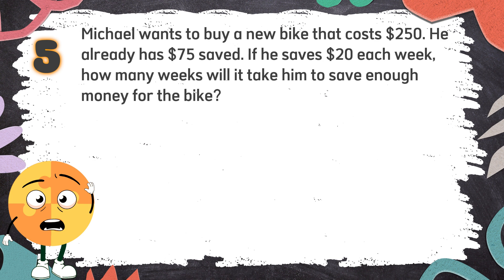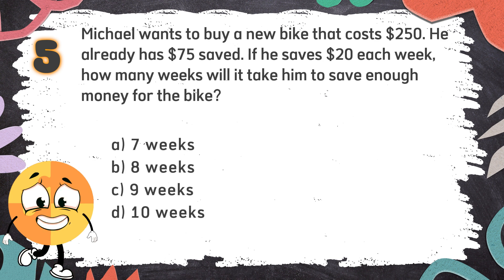Number 5: Michael wants to buy a new bike that costs $150. He already has $75 saved. If he saves $20 each week, how many weeks will it take him to save enough money for the bike? Again, Michael wants to buy a new bike that costs $150. He already has $75 saved. If he saves $20 each week, how many weeks will it take him to save enough money for the bike? The choices are: A. 7 weeks, B. 8 weeks, C. 9 weeks, D. 10 weeks.